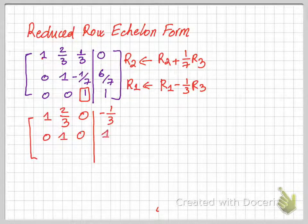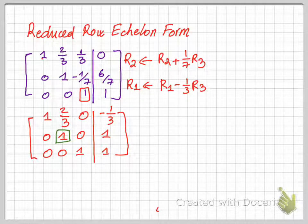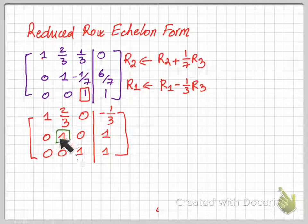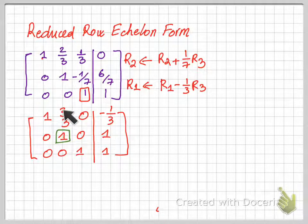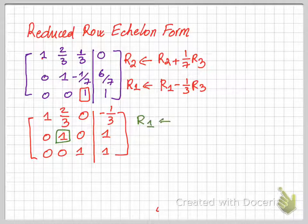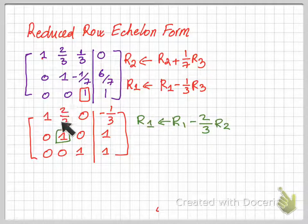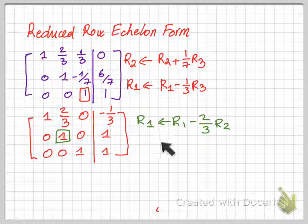Performing these two operations gives us a new matrix. Looking at the new matrix, the third column is already in its reduced row echelon form. Then we move left to the second pivot position, and again we need to make sure this pivot is the only non-zero value in the second column. The row operation used is: row 1 is transformed by taking row 1 minus 2/3 of row 2.